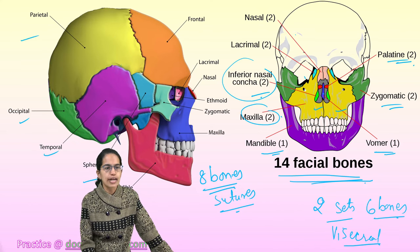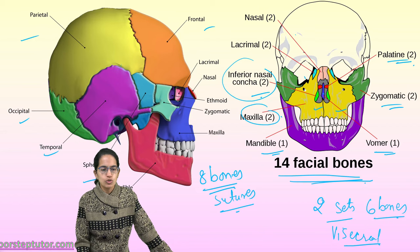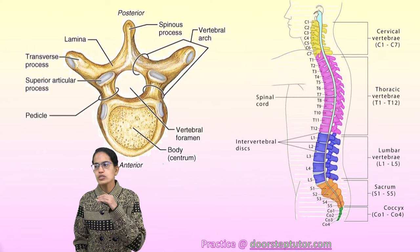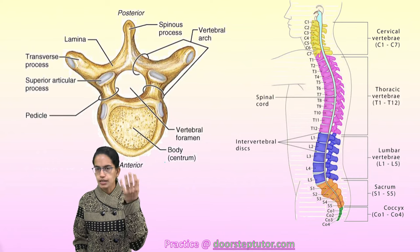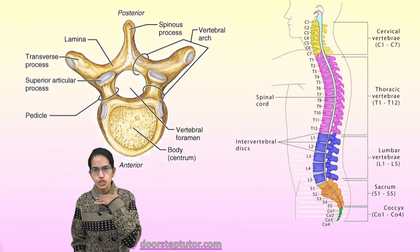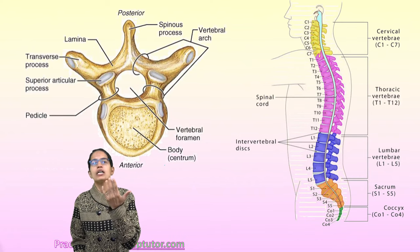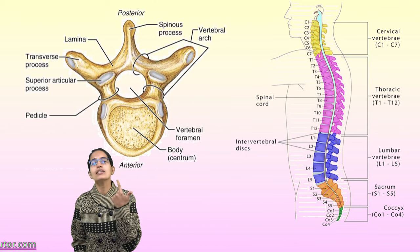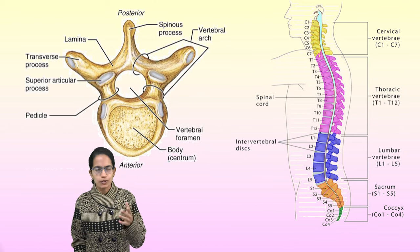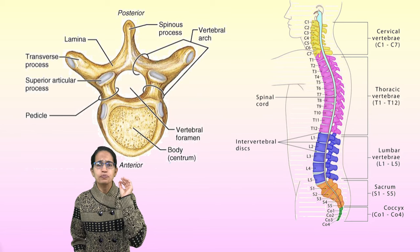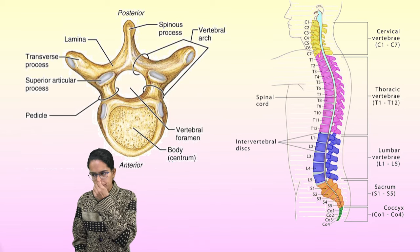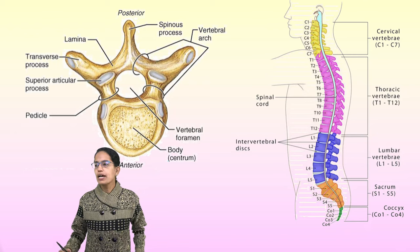The skull bones include the sphenoid, temporal, occipital, parietal, and frontal — those are the major skull bones, making eight bones in the cranium or brain box. Combined: 14 facial bones, two sets of six bones for the sense organs, and one hyoid bone — together 38 bones in the skull.